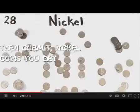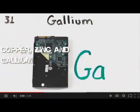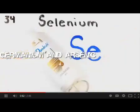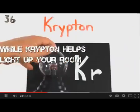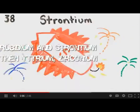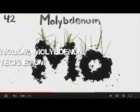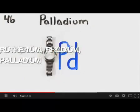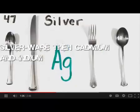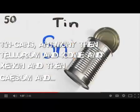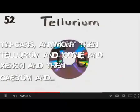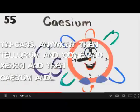Iron is the 26th, then cobalt, nickel coins you get, copper, zinc and gallium, germanium, and arsenic. Selenium and bromine film, while krypton helps light up your room, rubidium and strontium, then yttrium, zirconium, niobium, molybdenum, technetium, ruthenium, rhodium, palladium, silverware, then cadmium, and indium, tin cans, antimony, then tellurium, and iodine, and xenon, and then cesium.